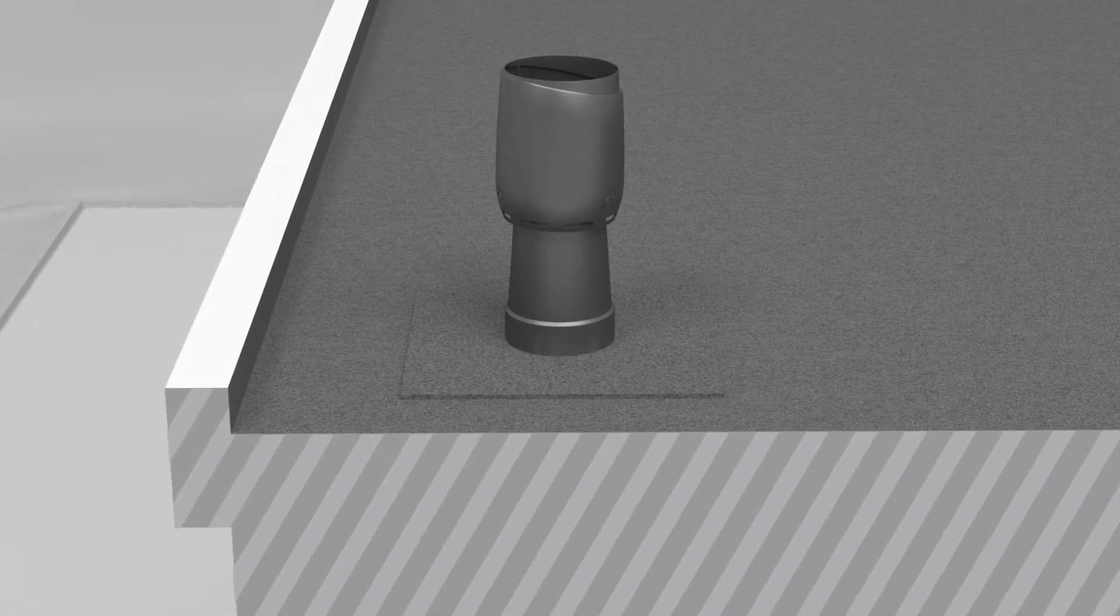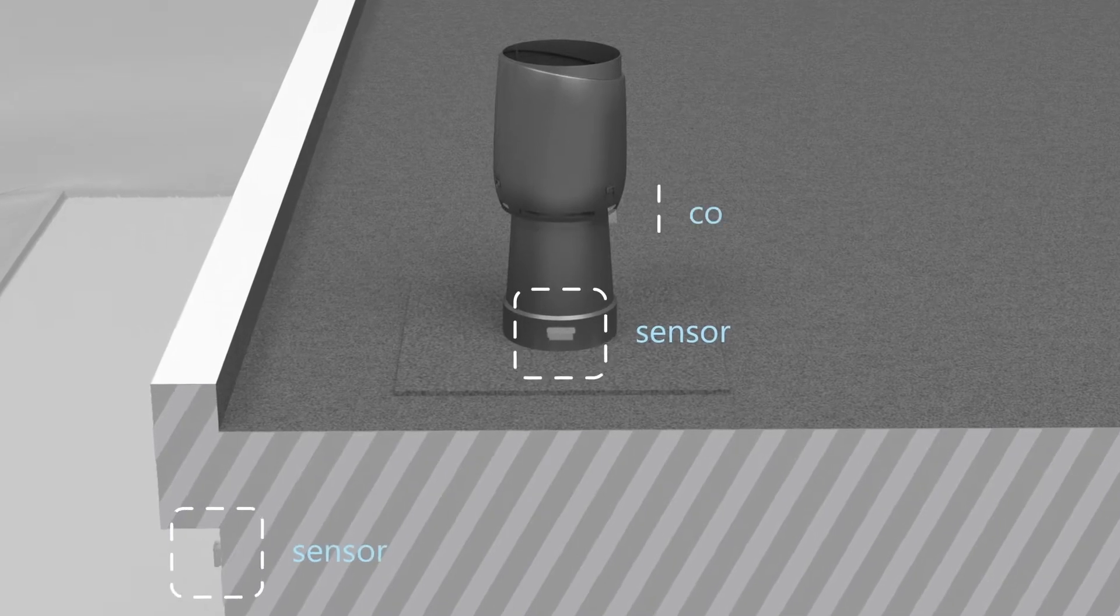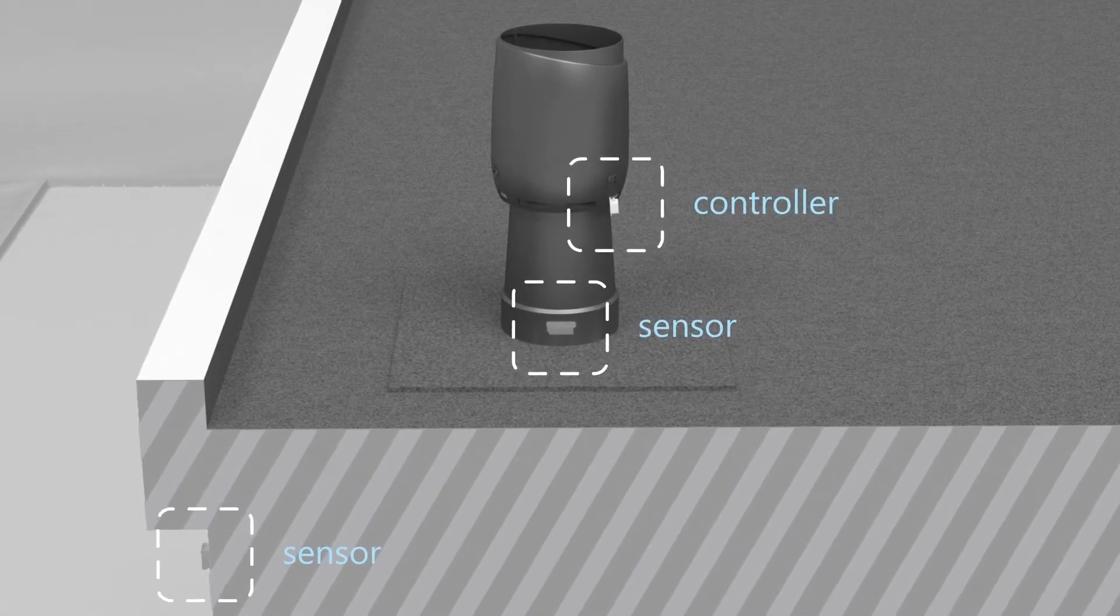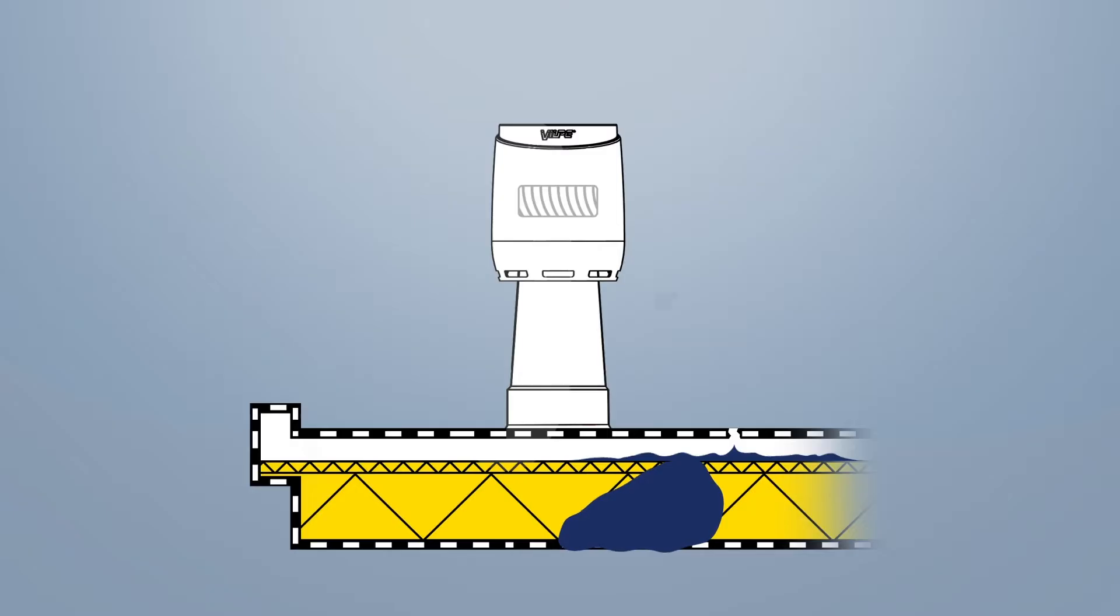The Vilpa Sense solution consists of two sensors and a control unit, which are linked to an energy-efficient eco-roof fan. One of the sensors monitors the temperature and relative humidity in the insulation layer, whilst the other measures that of the outdoor air.